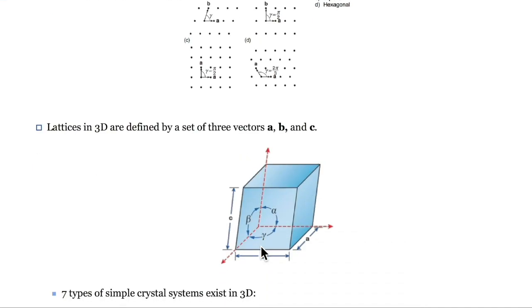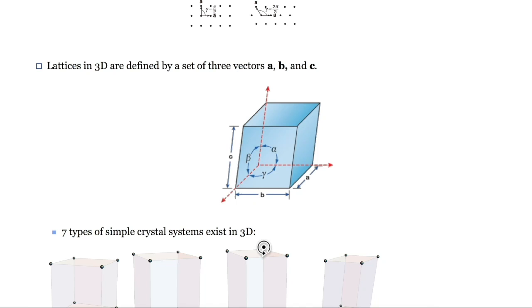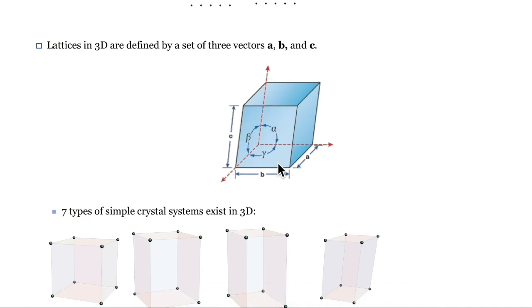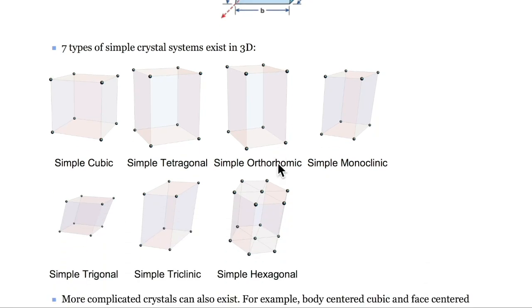On the other hand, lattices in three dimensions are defined by the three lattice vectors A, B, and C, which have angles of alpha, beta, and gamma between them. There are seven types of simple crystal systems, which you can see here. These structures range from simple cubic, where all the lattice vectors are equal and all the angles are 90 degrees, to triclinic, where all the lattice vectors and angles are different.